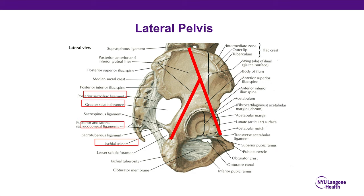Here's the outside of the innominate with the inverted Y shape of the anterior column and the posterior column, which is important for classification of acetabular fractures. You can see the greater sciatic foramen and the lesser sciatic foramen, which is separated by the sacrospinous ligament. You can also see the sacrotuberous ligament coming from the lateral aspect of the sacrum, crossing over to the ischial tuberosity.